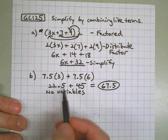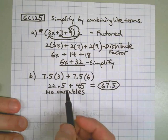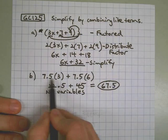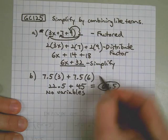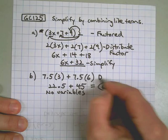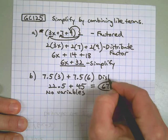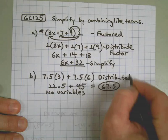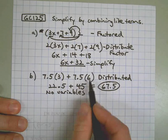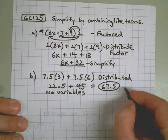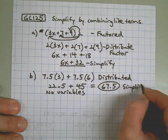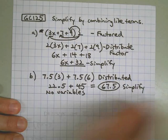This one was a little easier for two reasons. One, it's already in distributed form — we didn't have to change it from factored form. Since I have no variables, I can just add these numbers together and actually get an answer, which is 67 and 5 tenths. And we always like that.